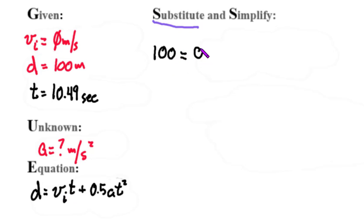Time is 10.49 plus 0.5 times acceleration, which we don't know, times time 10.49, but we're going to square that. This is because any number multiplied by zero blows up.